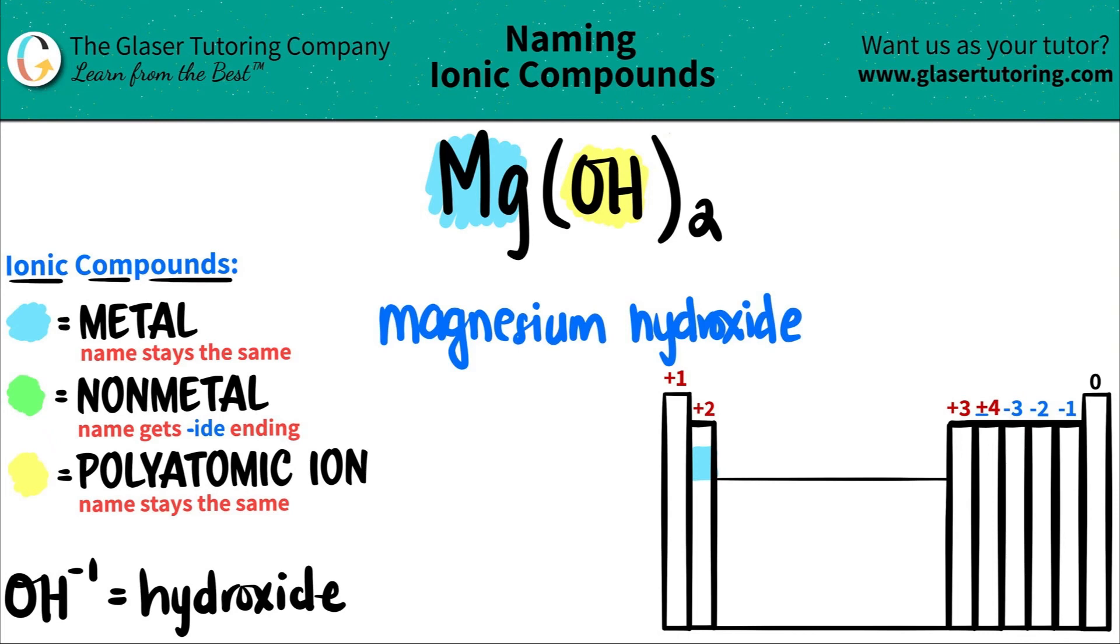Now, since this is an ionic compound with a metal, does magnesium need a Roman numeral? Well, magnesium is not a transitional metal, so technically I don't need a Roman numeral. Anything in group two does not need a Roman numeral. So we're done.